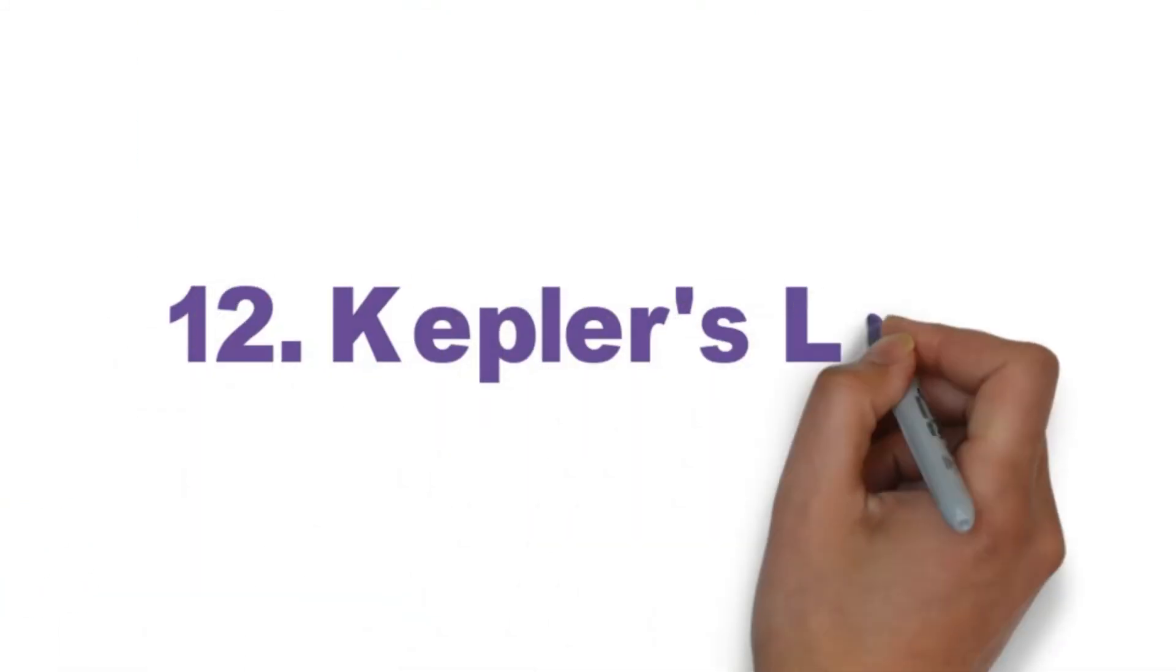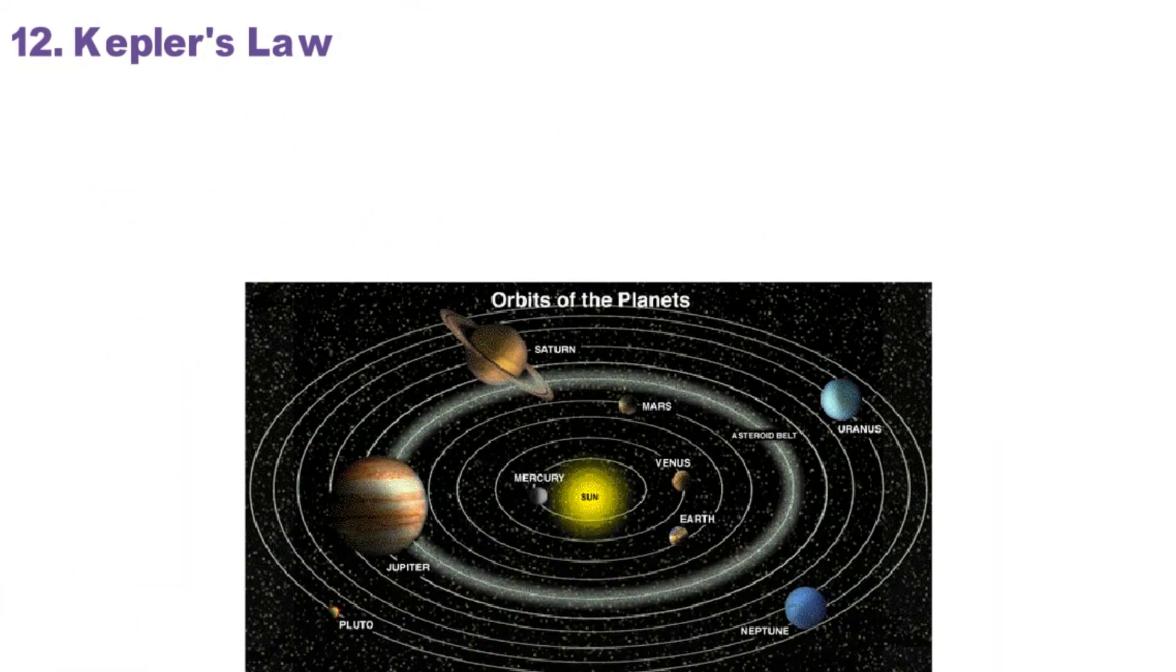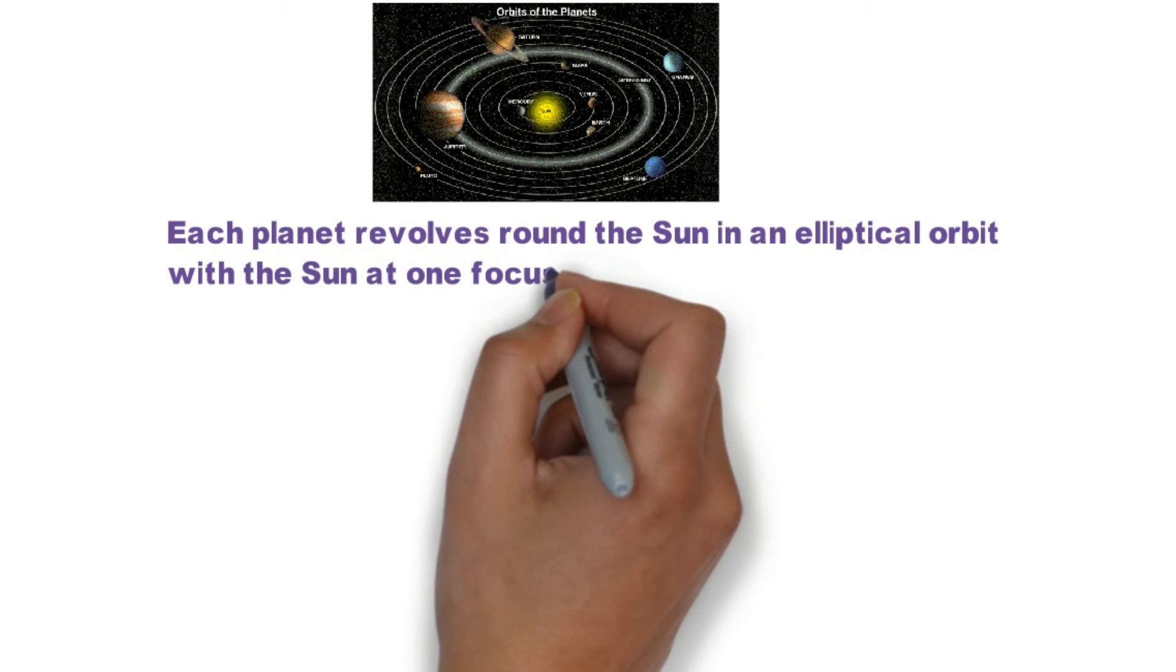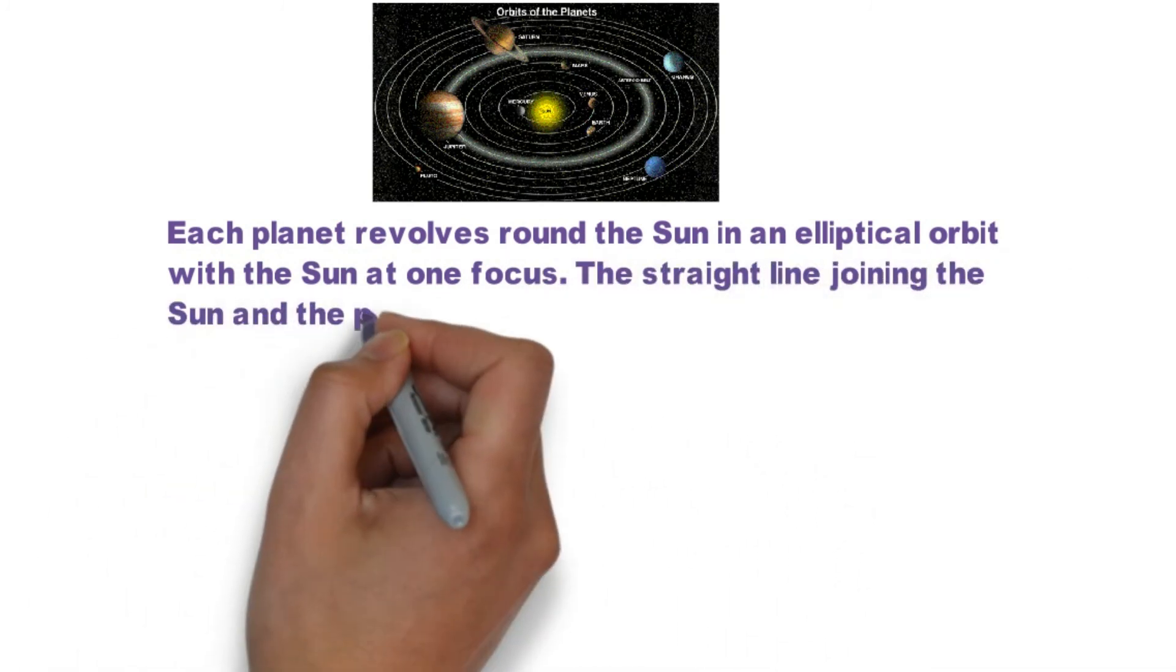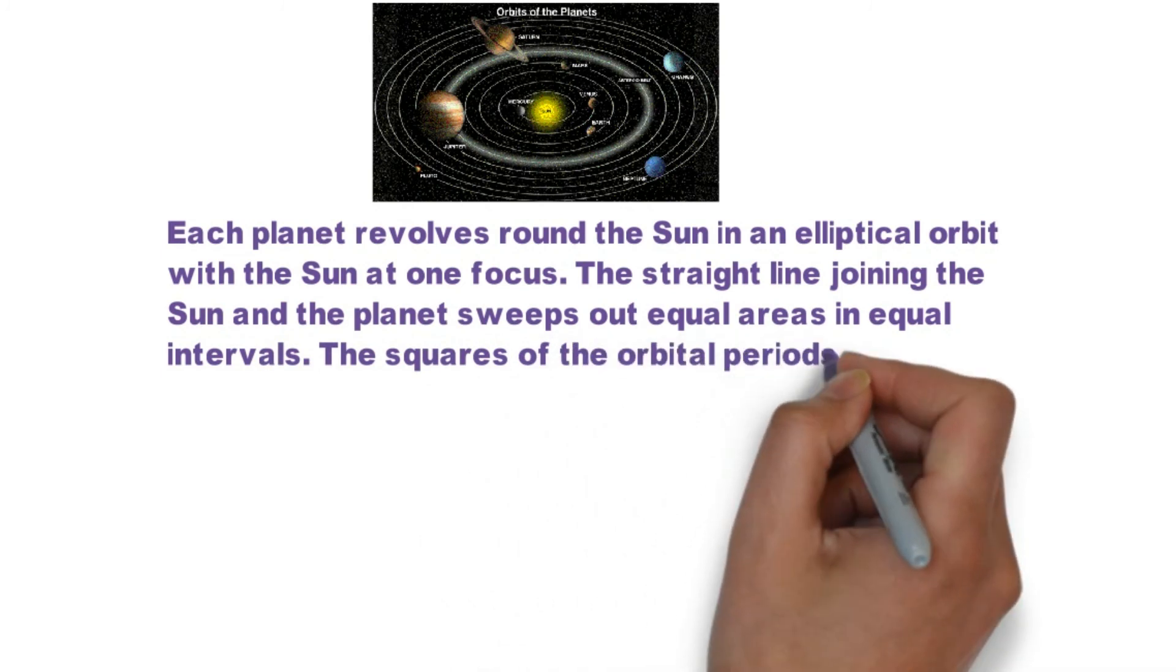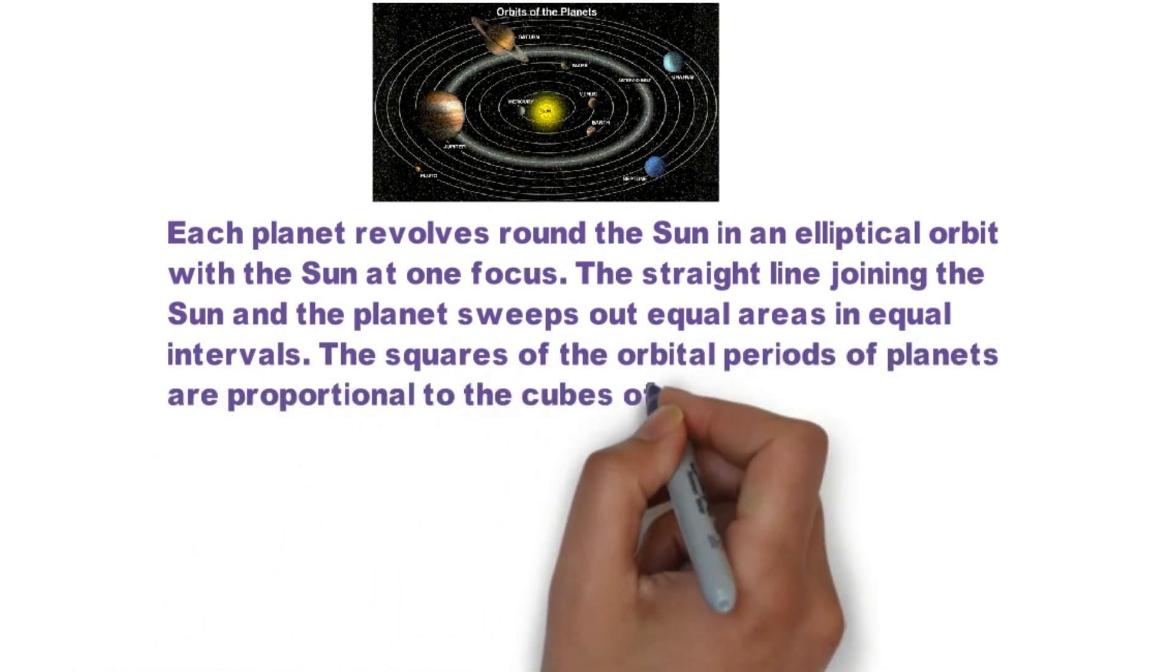Kepler's Law. Each planet revolves round the sun in an elliptical orbit with the sun at one focus. The straight line joining the sun and the planet sweeps out equal areas in equal intervals. The squares of the orbital periods of planets are proportional to the cubes of their mean distance from the sun.